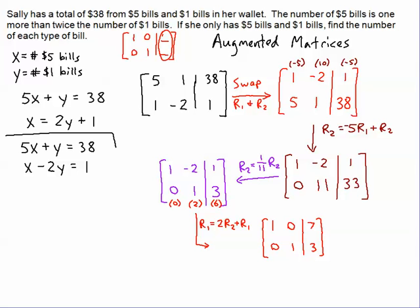So if you notice now, we have our multiplicative identity matrix right here. 1, 0, 0, 1, however you want to look at it. And since this is our multiplicative identity, I know that our solutions are right there. The top one is the value of x. So therefore, there are 7 $5 bills. And the bottom one is y. So therefore, there are 3 $1 bills.